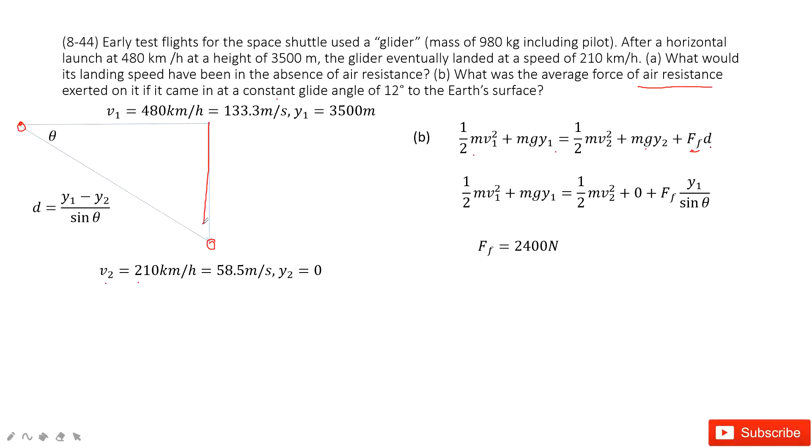So this side equals y1 minus y2. This is angle theta. Can you find this length? The d is y1 minus y2 divided by sine theta.